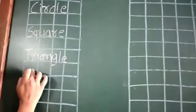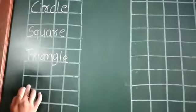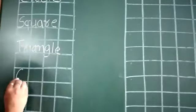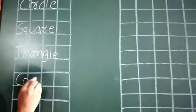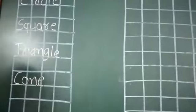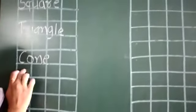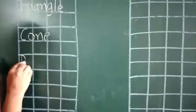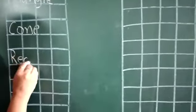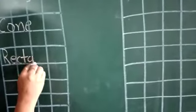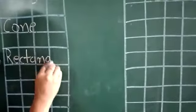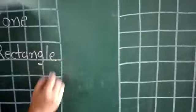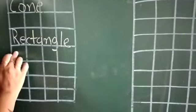Again leave one box. Next. C-O-N-E. Cone. Again leave one box. Next. R-E-C-T-A-N-G-L-E. Rectangle. Leave one box.